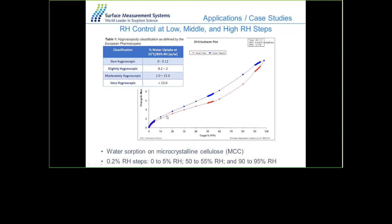Here is a classification table for hygroscopic materials. Very low levels of uptake — down to 0.12% — are classified as non-hygroscopic material. It is therefore important for the balance to register very low mass uptakes, and for the mass flow controllers to accurately control vapor concentrations.